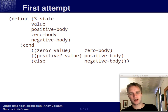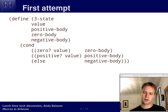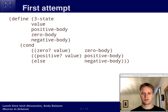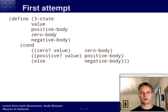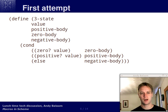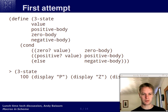Here's our first attempt at encapsulating the concept of this three-state thing — positive, zero, or negative. We're defining a function called 'three-state'. It takes in four arguments: the first is the value we want to ask about, and the next three are the things you do depending on whether it's positive, zero, or negative. Here's the implementation — it's this cond expression we've seen. If it's zero then the answer is zero-body, if it's positive then positive-body, otherwise negative-body.